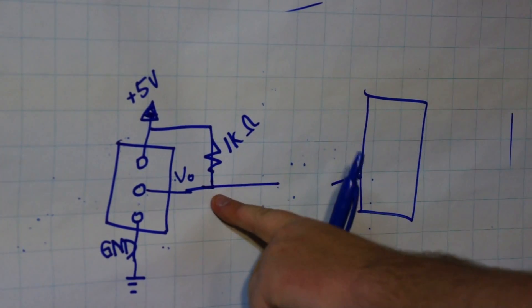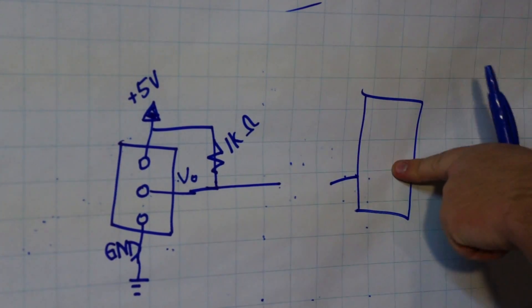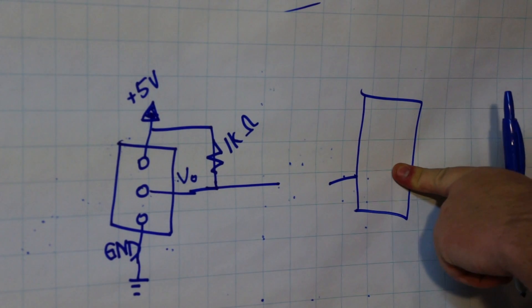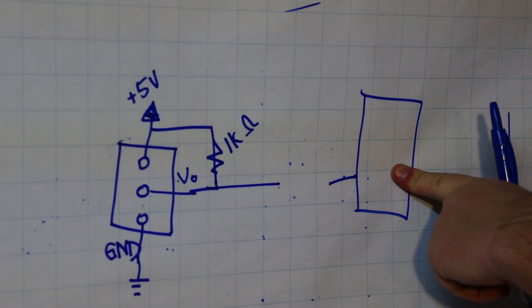Now, because this is at a 5 volt level, most microcontrollers run at a 3.3 volt level. Again, check your data sheets for your microcontroller.